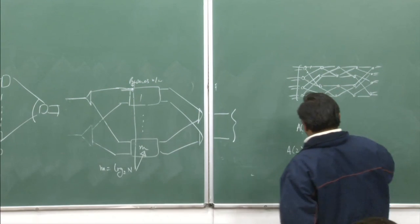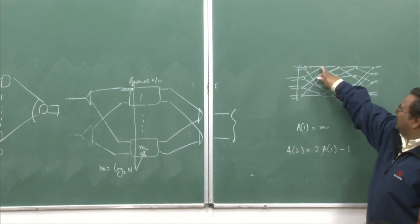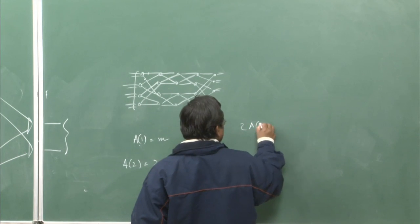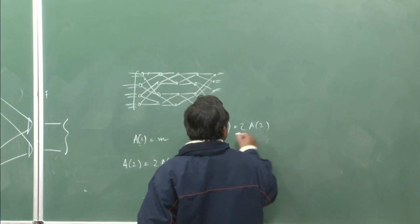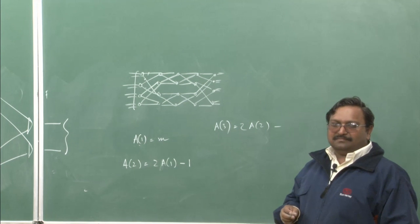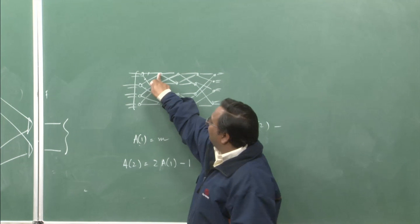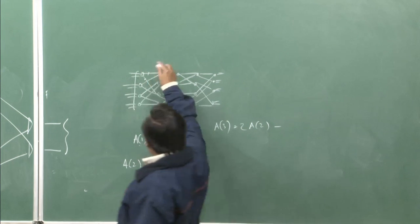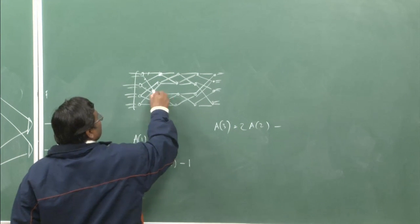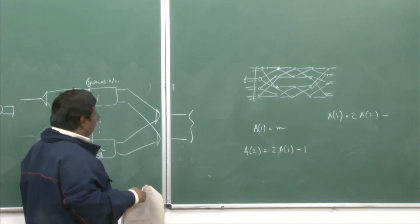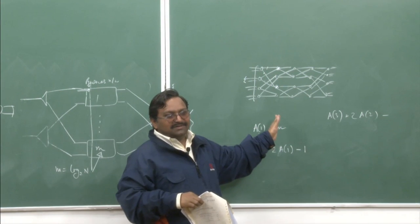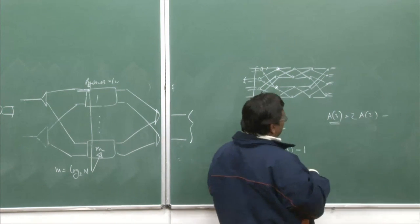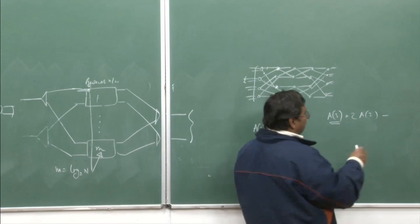A₂ which I can reach is 2·A₁ − 1. From the first to second stage: each switching element has a second input. In worst case, all second inputs in all M switching elements are already connected — that path consumes one route. So from A₁ reachable first-stage elements, I can reach 2·A₁ nodes in the second stage, minus 1 which has been occupied. So A₂ = 2·A₁ − 1.